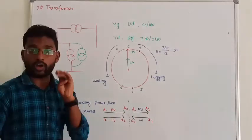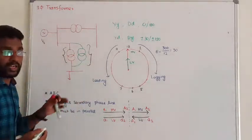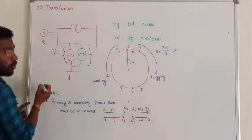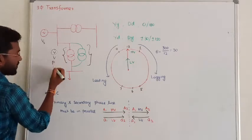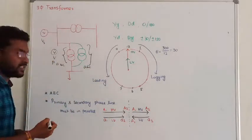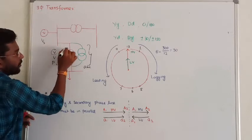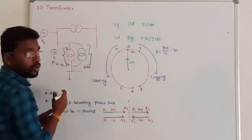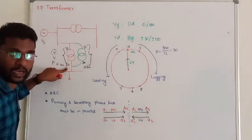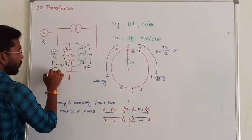The parallel operation concept — we saw four conditions in the three-phase system. If there is a transformer and an incoming transformer, they are going to be parallel connected with the same voltage magnitude, same polarity, same phase sequence (a, b, c), and the phase displacement between primary and secondary must be the same. These four conditions are mandatory while performing three-phase parallel operation.